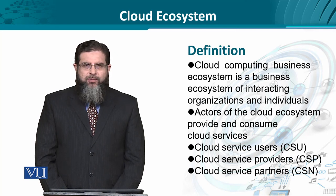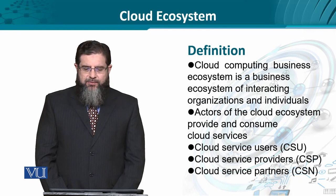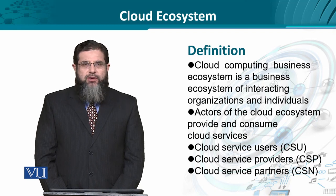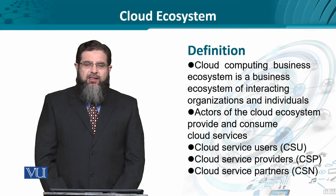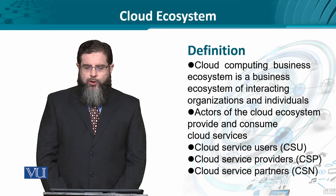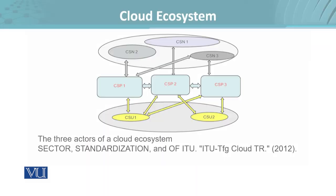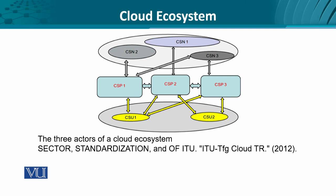So formally, the ITU-T document defines three players: the cloud service users, cloud service providers, and the cloud service partners, also known as the cloud service networks. The diagram and text are taken from the International Telecommunication Union Telecom reference document from 2012, that is the ITU-T focus group on cloud — technical standard recommendations for standardization.